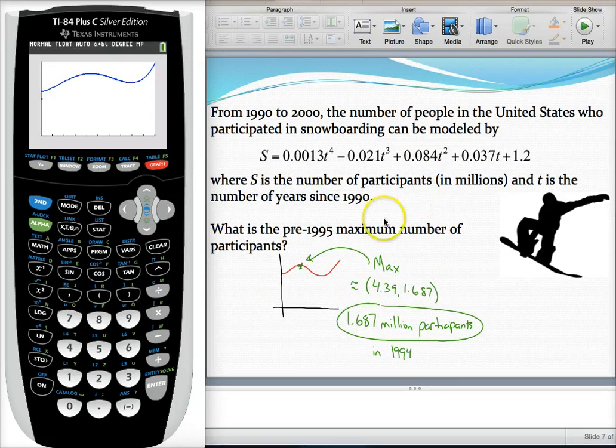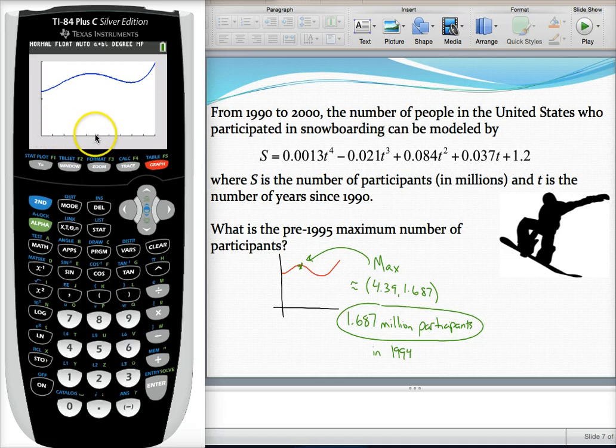And then for our last question, they want us to find the pre-1995 maximum number of participants. So 1995 would be about here. So I want to find this maximum point.